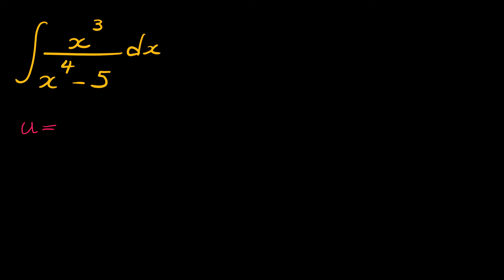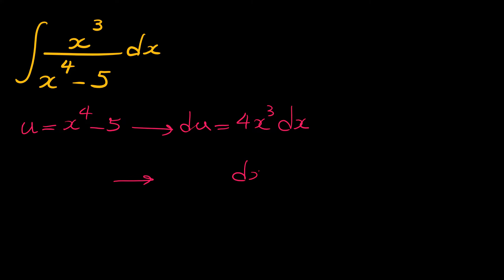If we choose u to be x⁴ minus 5, then du, the derivative of u, is 4x³ dx. If we solve this for dx, then dx equals du over 4x cubed.